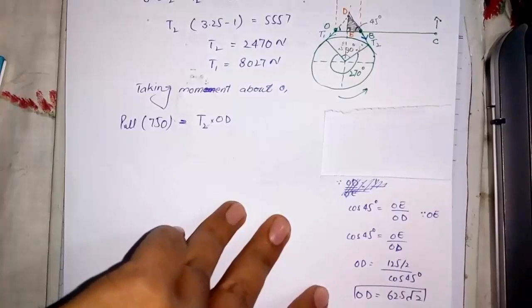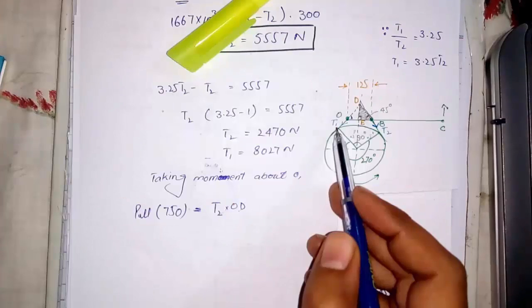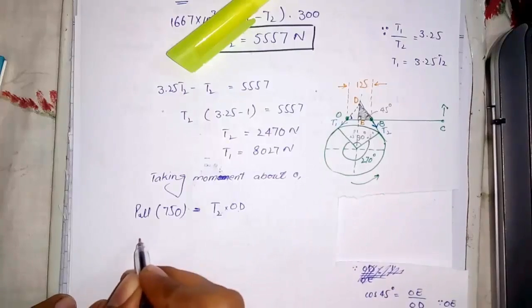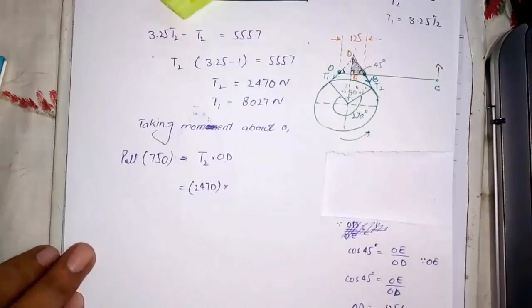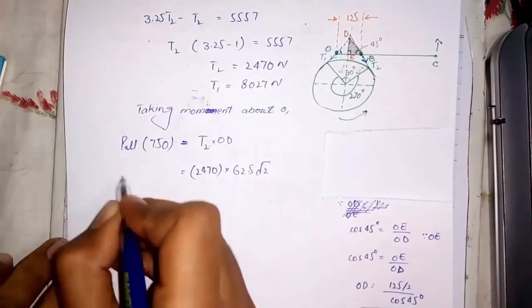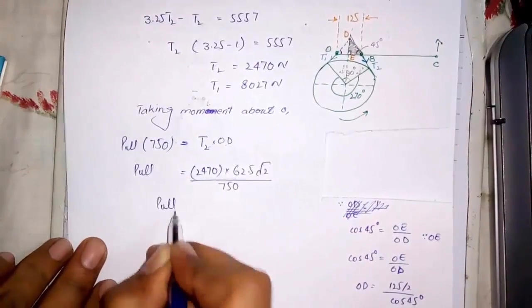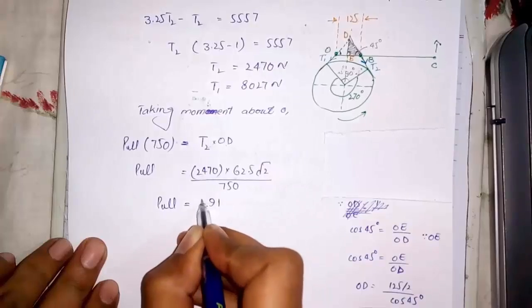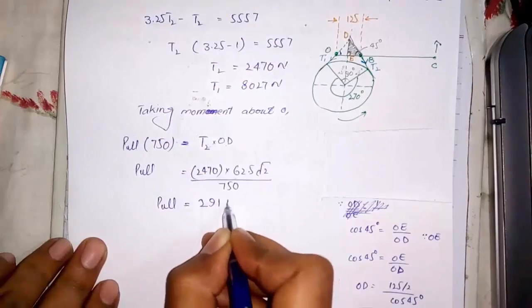Now we have od. Moment due to T1 is zero because it is passing through the pivot point O. By simplifying, we have pull value.